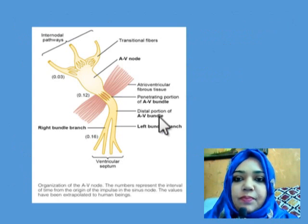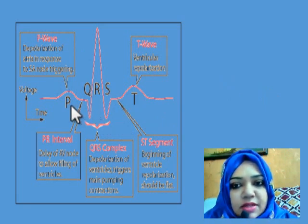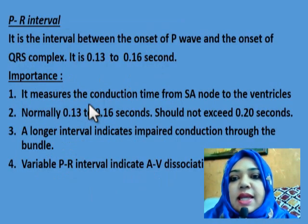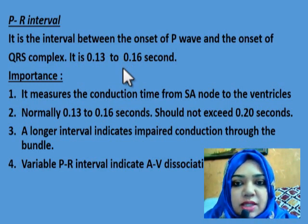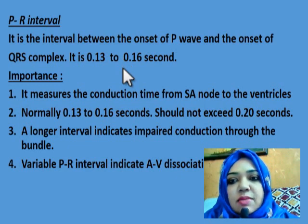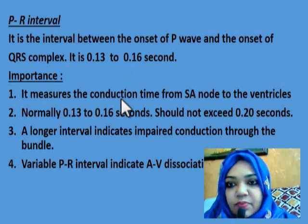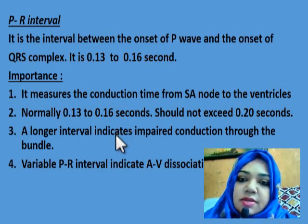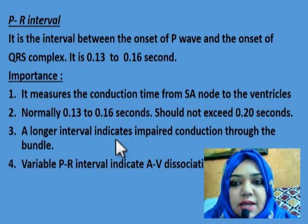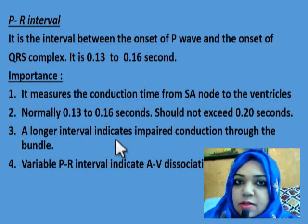On the ECG we have the P wave, QRS complex, and T wave. The PR interval represents the AV nodal delay — it is the interval between the onset of the P wave and the onset of the QRS complex, normally 0.13 to 0.16 seconds. Its importance is that it measures the conduction time from the SA node to the ventricle, and it should not exceed 0.20 seconds.